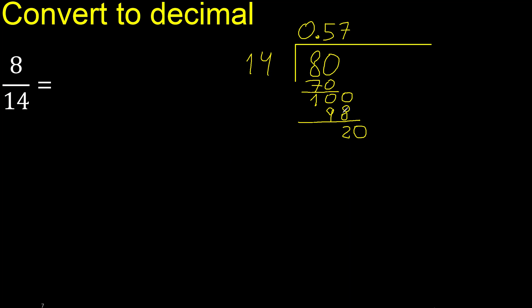Complete 20. 14 multiplied by 1 is 14, subtract. Complete 60. 14 multiplied by 4 is 56.